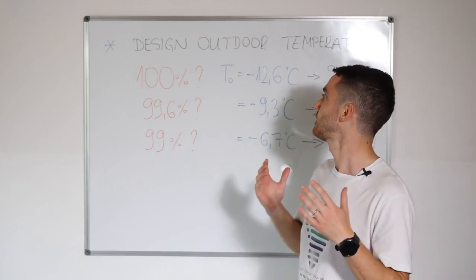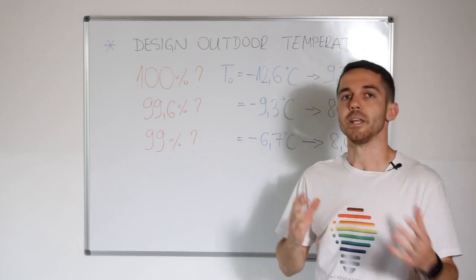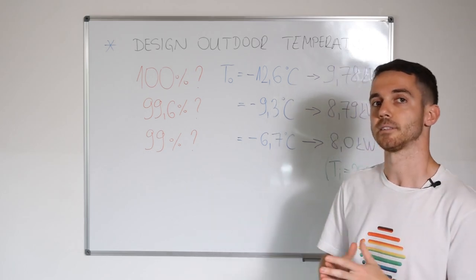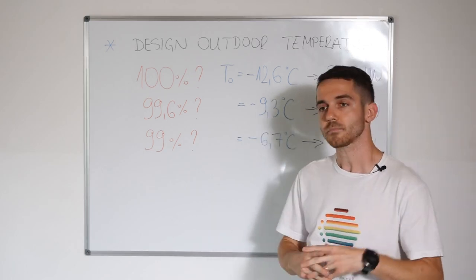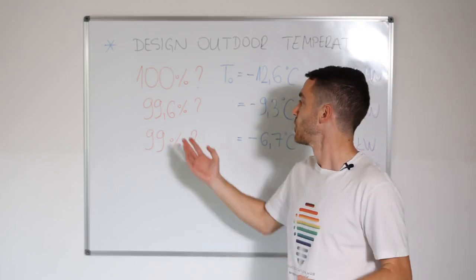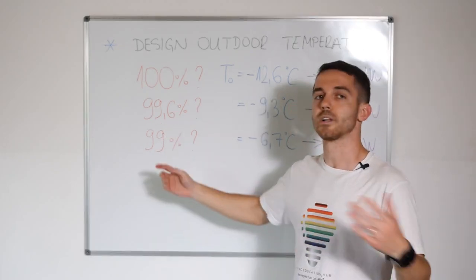It means that average minimum temperature for some period of time is taken into account. In some other cases, in some other countries, you can choose 99.6% or 99%.